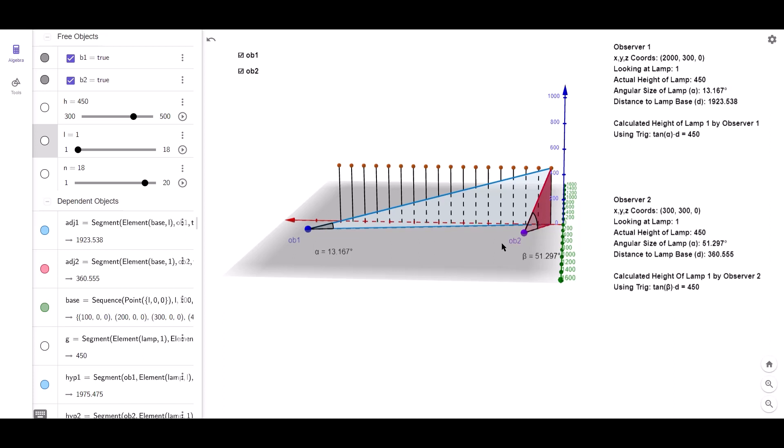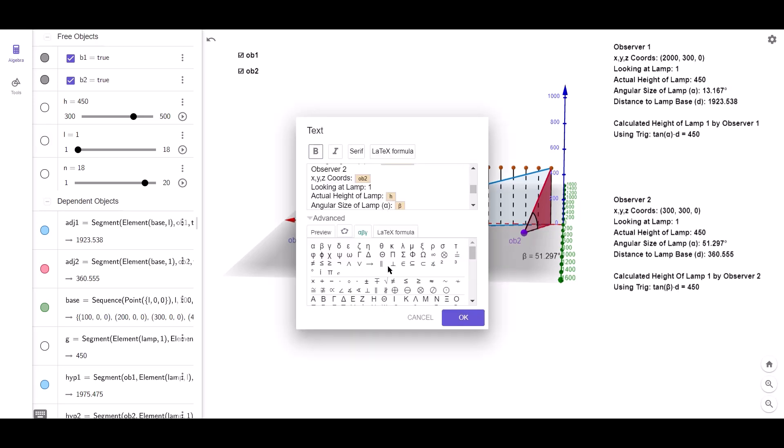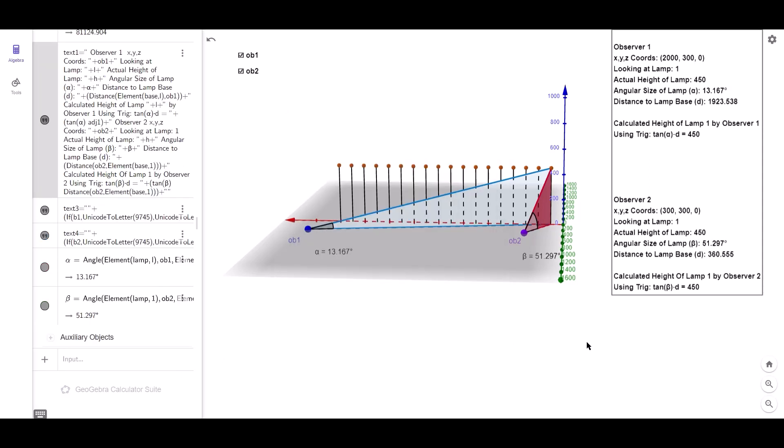Both will arrive at a height of 450. Mike calculated his height using tan alpha multiplied by his distance, whereas Michelle used tan beta multiplied by her distance. I don't know why that says alpha, should be beta. Can you spot it? There. There we go, I thought I changed that earlier.